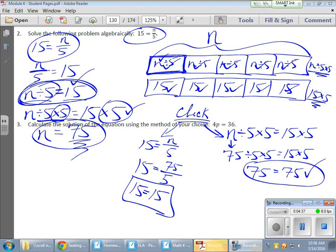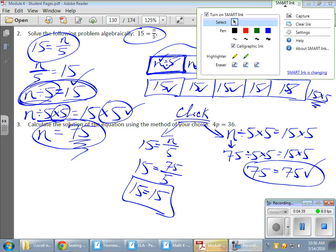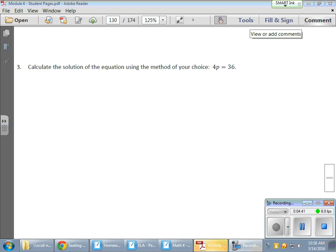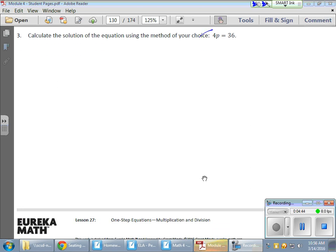Well, that's a nice example using division. But let's work an example that's using multiplication. Like this guy right here: 4p equals 36. I'm going to write that over here. 4p equals 36. Now that means multiplication: 4 times p equals 36.